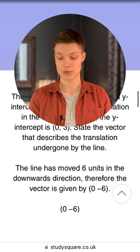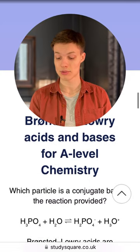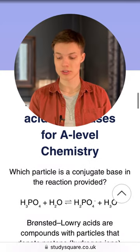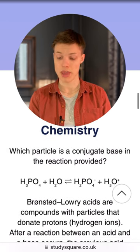What kind of mistakes would students make in Brønsted-Lowry acids and bases for A-level chemistry? So it says, which particle is a conjugate base in the reaction provided? Here we go.